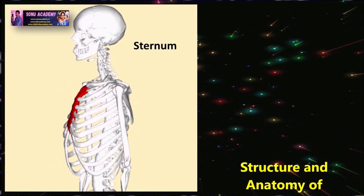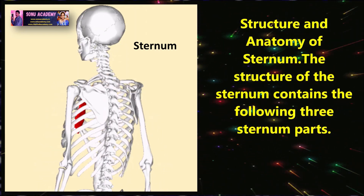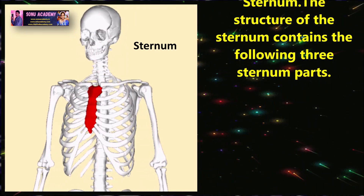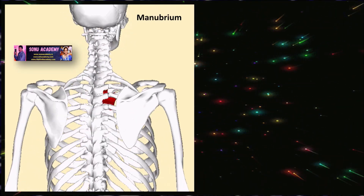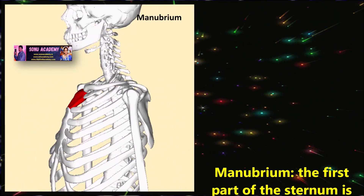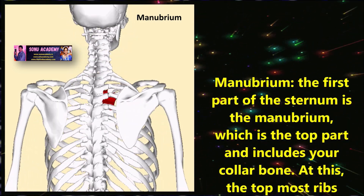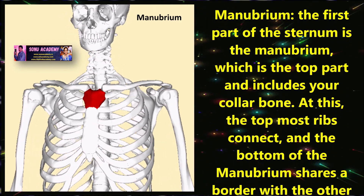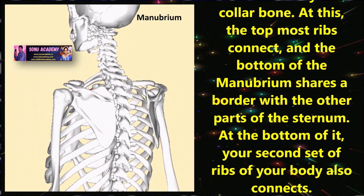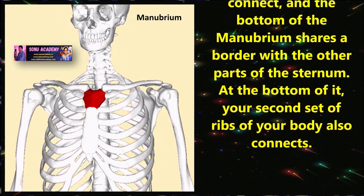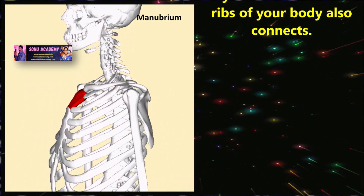Children, let us discuss the structure and anatomy of sternum. The structure of the sternum consists of three parts. The first part is called the manubrium, which is the top part and includes your collarbone. At this point, the topmost ribs connect, and the bottom of the manubrium shares a border with the other parts of the sternum. Your second set of ribs also connects here.